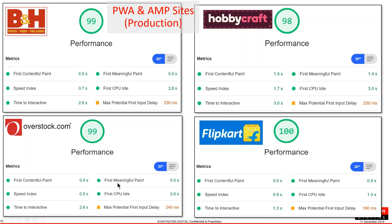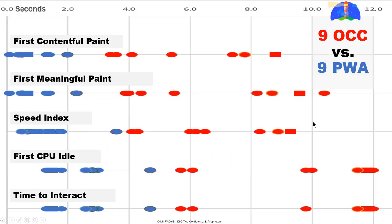We tested nine OCC production sites versus nine production PWA sites across five metrics: first contentful paint, first meaningful paint, speed index, CPU idle, and time to interact. PWA sites generally score around 2 seconds or less on most metrics, while OCC sites generally show 4 to 10 seconds of response times. This is not just a few exceptions — it's a general trend demonstrating the value of PWA over general technologies.